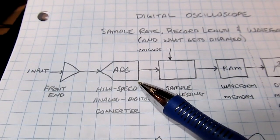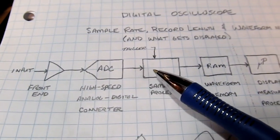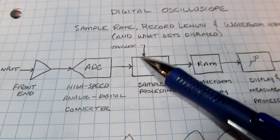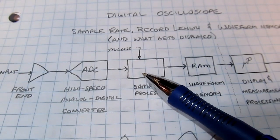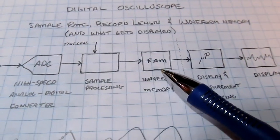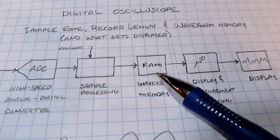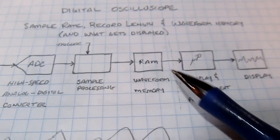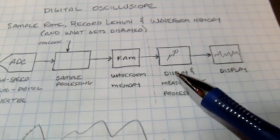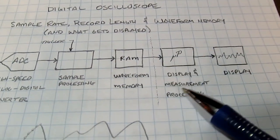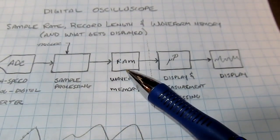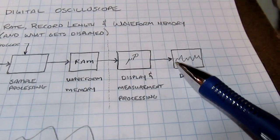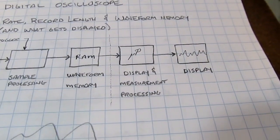Those digital snapshots are essentially sent to the sample processing hardware along with a trigger to determine what gets placed into waveform memory, into RAM. Once we've got that data in RAM, there's some additional processing that determines what gets displayed on the screen in terms of a waveform and measurements.